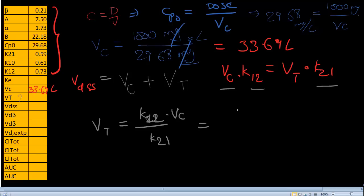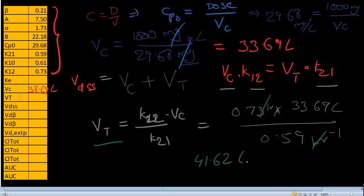Let's calculate this. What is k12? 0.73 times Vc is 33.69 liters. This is hour inverse. What is k21? That's 0.59 hour inverse. Let's cancel the units. Hour inverse and hour inverse cancel, and we are left with liters. Obviously, volume of distribution is measured in liters for the tissue compartment. So Vt is 41.62 liters.